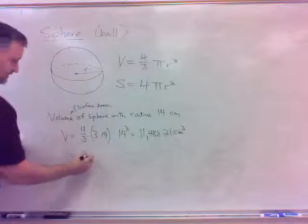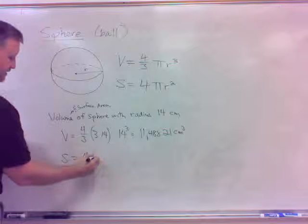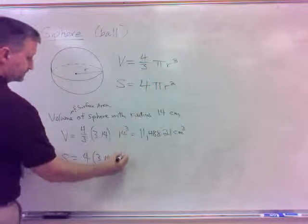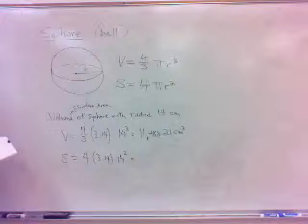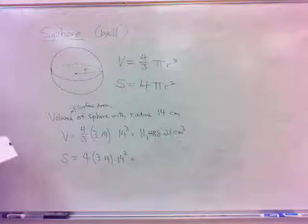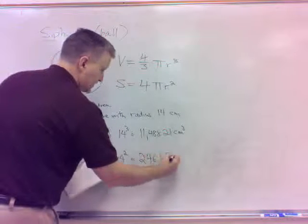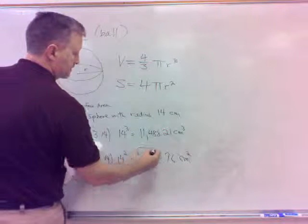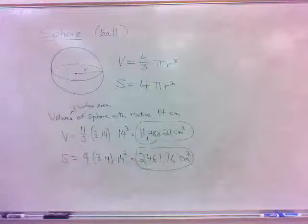Surface area is just 4 pi r squared, so that would be 4 times pi, 3.14 times r squared. So I'd just do 14 squared, so that would be 4 times 3.14 times 14 squared, 2,461.76 surface area. So we're back to square centimeters, okay?